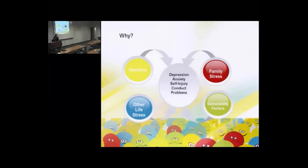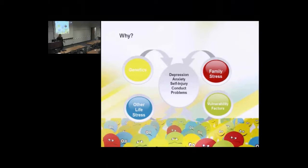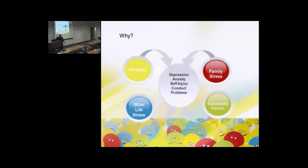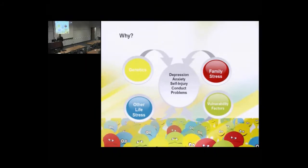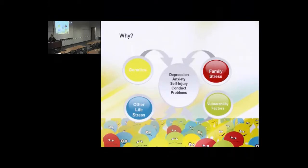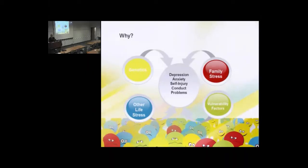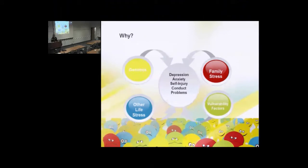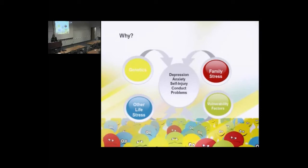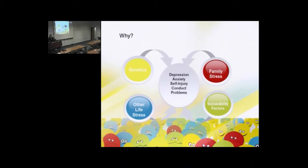Conversely, students who have a significant genetic loading and a strong family history won't need as much environmental stress — they're more vulnerable. This is true for depression, anxiety, self-injury, and conduct problems like oppositional defiant disorder and conduct disorder, though ADHD is a little bit of a different animal.